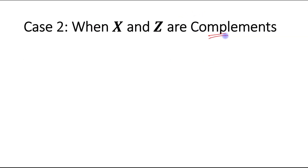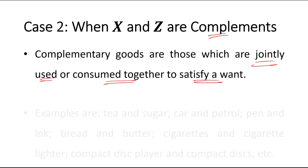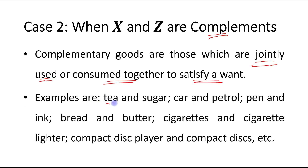Case 2: when X and Z are complements. Complementary goods are those which are jointly used or consumed together to satisfy a want. Examples include tea and sugar, car and petrol, pen and ink, bread and butter, cigarettes and cigarette lighter, compact disc player and compact discs, etc.